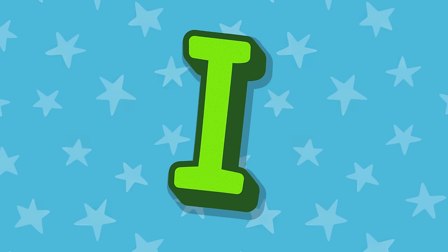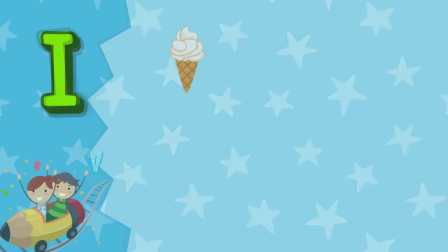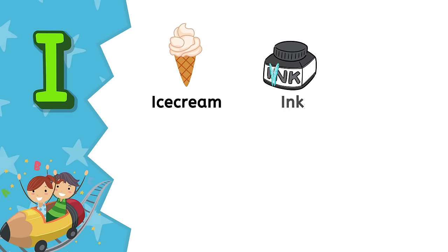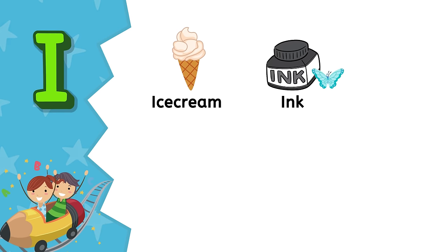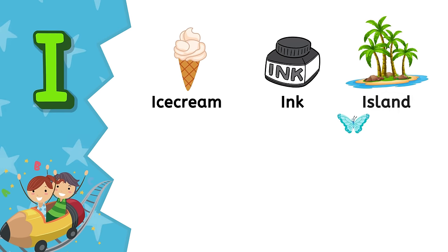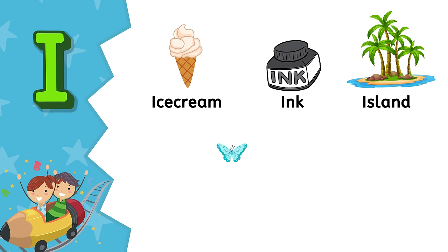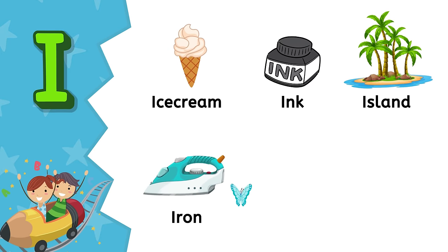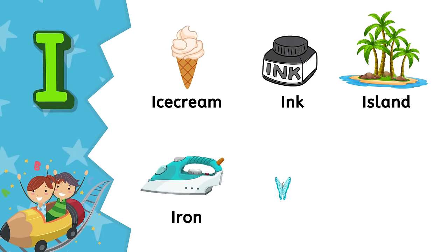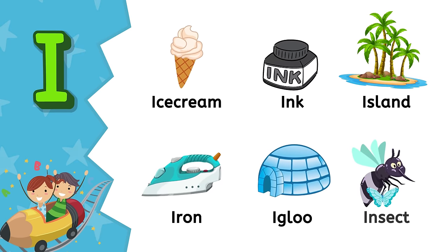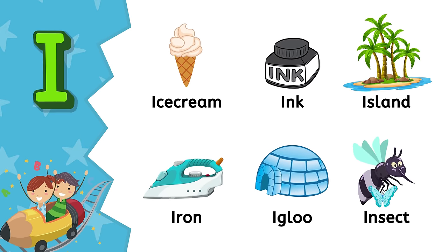I. I is for ice cream. I is for ink. I is for island. I is for iron. I is for igloo. I is for insect.